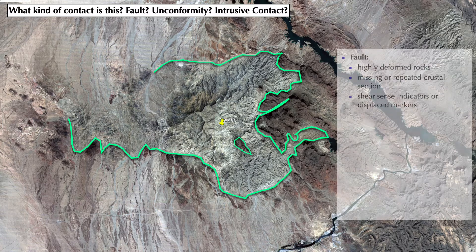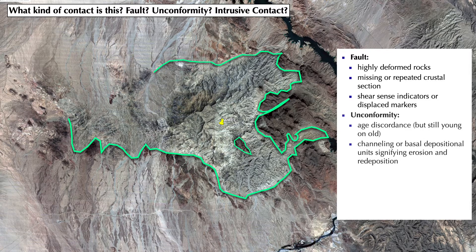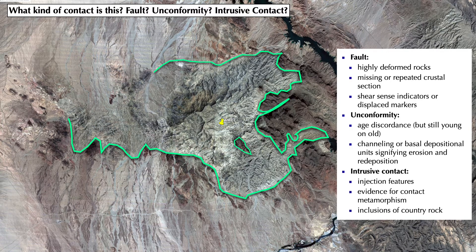To recognize a fault, I'd look for highly deformed rocks, missing or repeated crustal section, shear sense indicators, or displaced markers that I can trace for offsets. To recognize an unconformity, I'd look for age discordances that still display a young and old relationship, channeling or basal depositional units indicating a period of erosion prior to new deposition. To distinguish an intrusive contact, I'd look for injection features, evidence for contact metamorphism, and inclusions of the host country rock in the intruding unit.